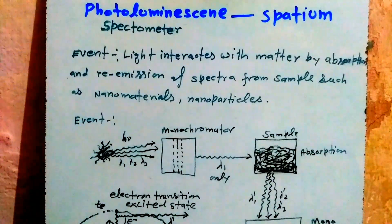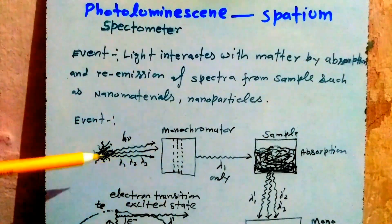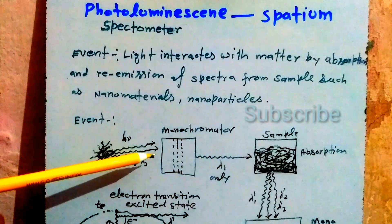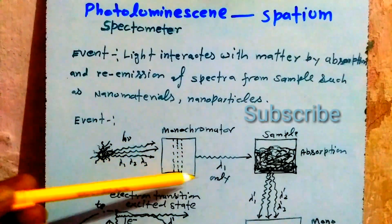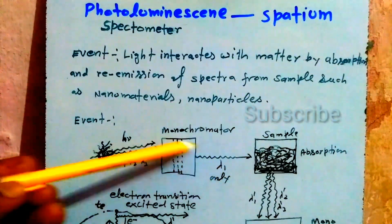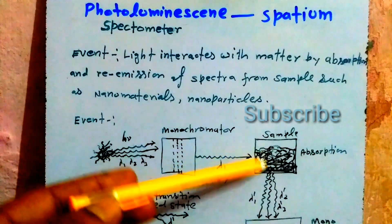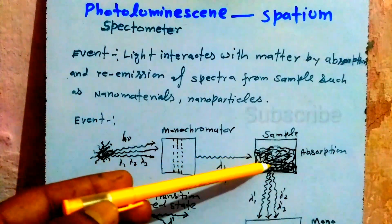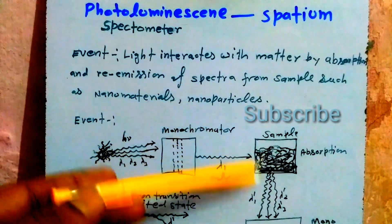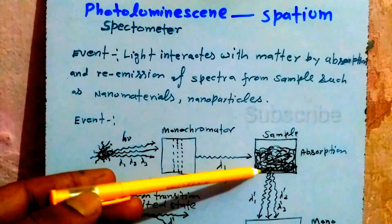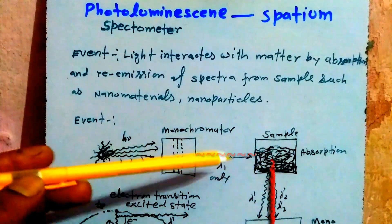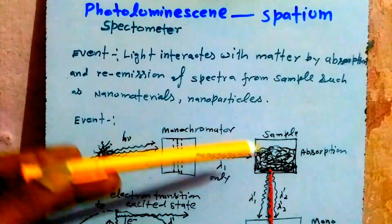The main phenomenon in this spectrometer is that when light passes through the monochromator, it filters multiple wavelength light into a single wavelength — monochromatic light. This monochromatic light then falls on the sample surface, which absorbs it, and after a certain time re-emits it in the form of an emission spectrum.